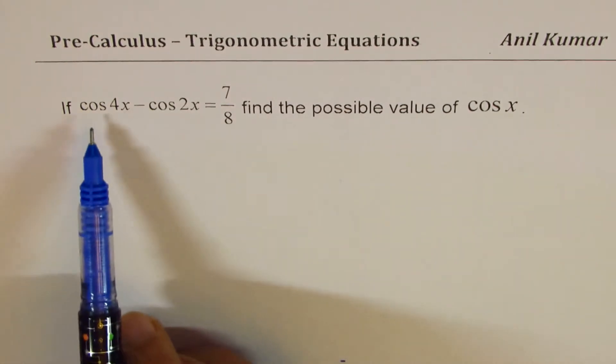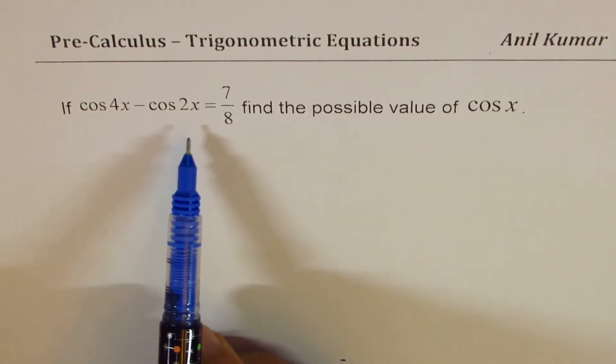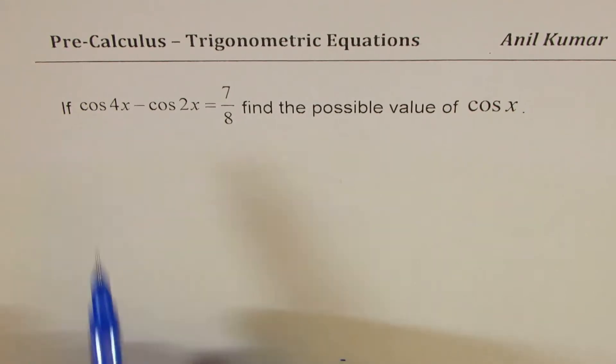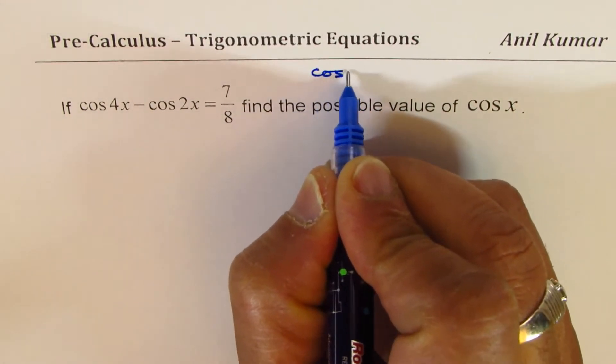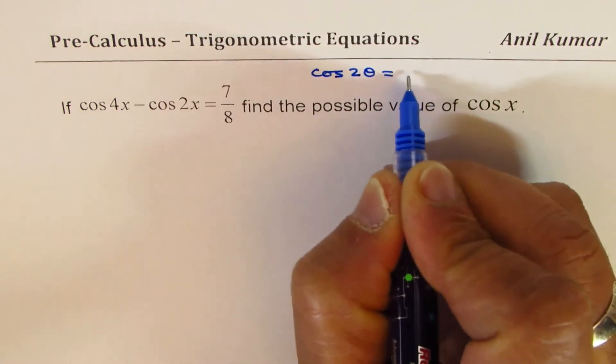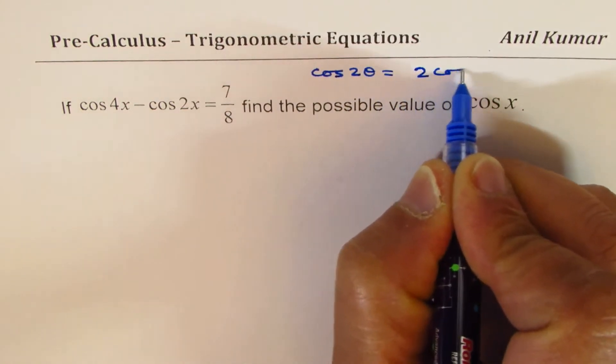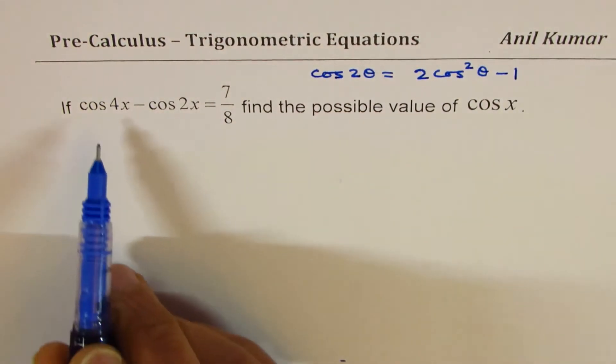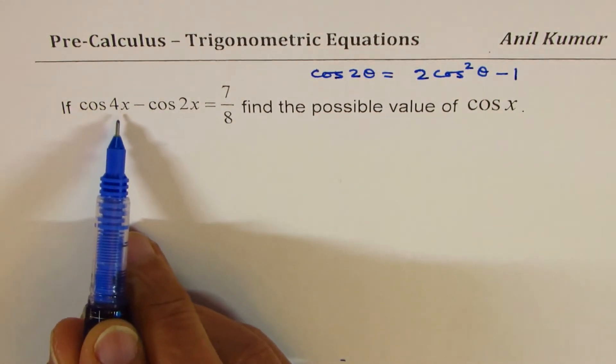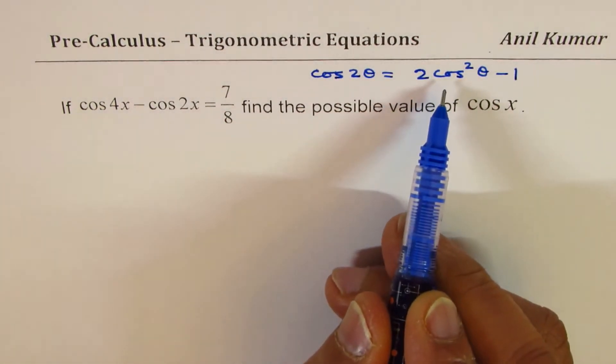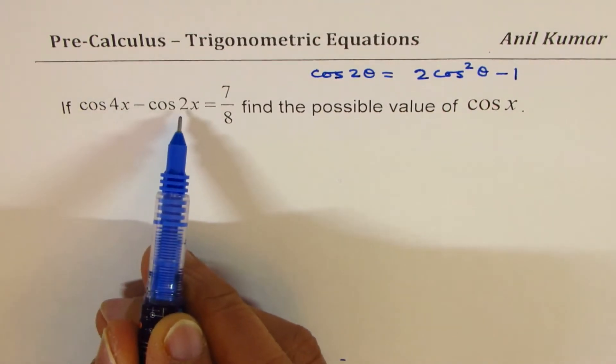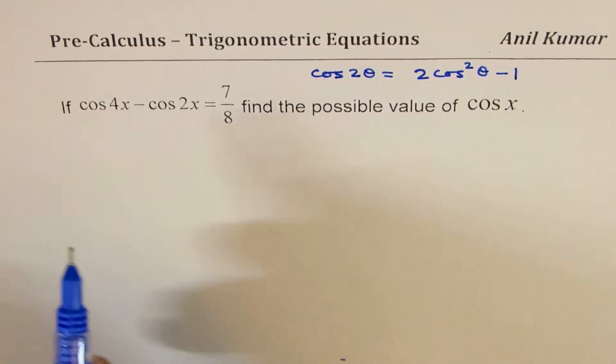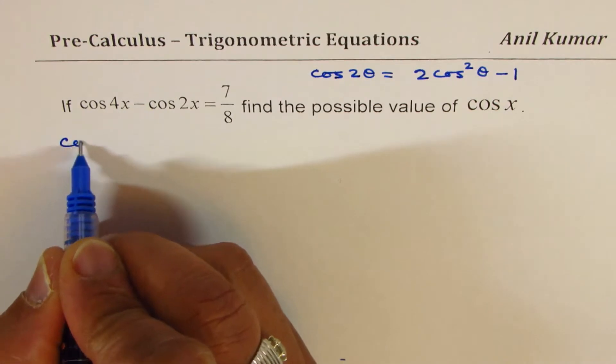Since we are given double angle, let's begin with the double angle formula for cos. We could write cos 2θ equals 2 cos² θ minus 1. Now we are given cos 4x, so we will use this double angle formula. Write 4x as 2 times 2x. So the equation...